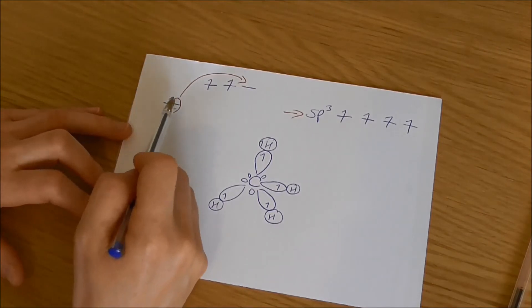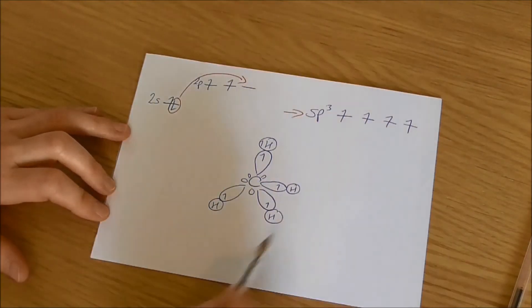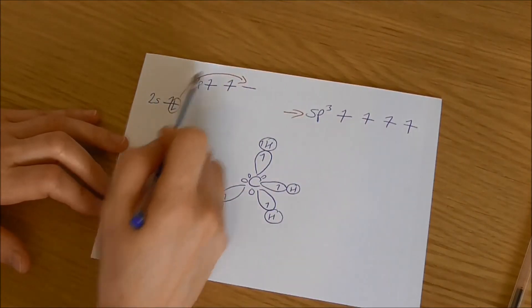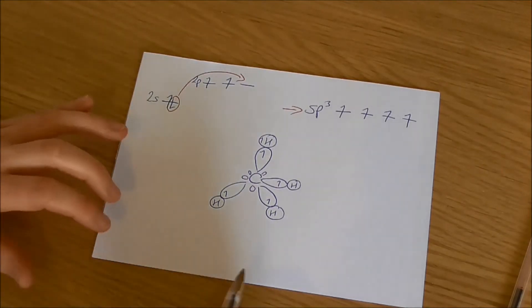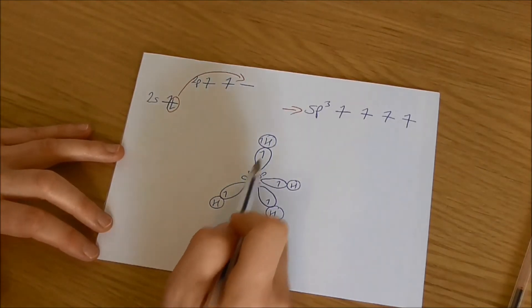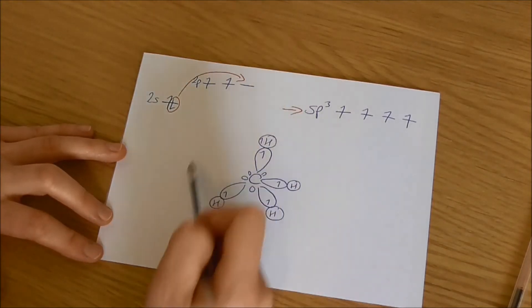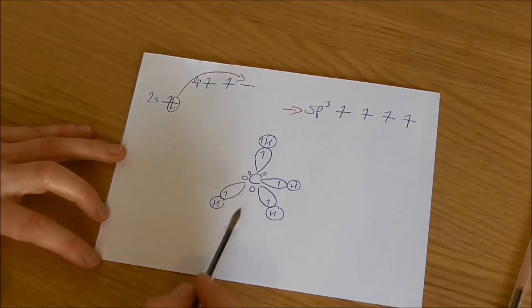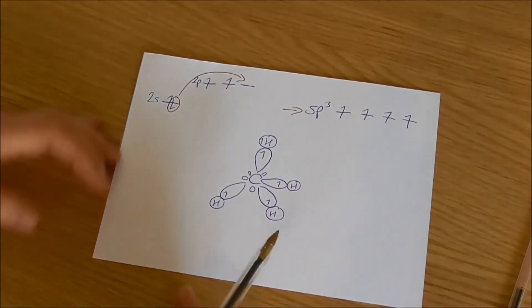This process of hybridizing the bonds, going from 2s and 2p orbitals to sp3 orbitals, costs energy because you're promoting an electron up. But we say that this is readily accounted for by the fact that carbon can now form four bonds and they're four strong bonds. The energy gained in forming four bonds instead of two bonds easily outweighs the energy cost of having to promote and hybridize those electrons.